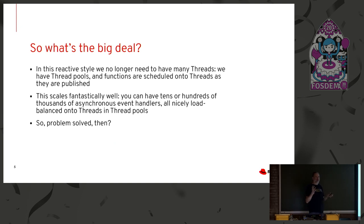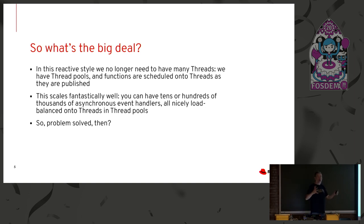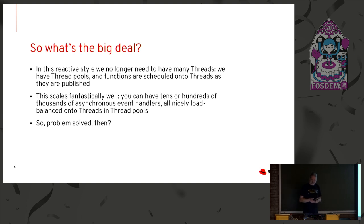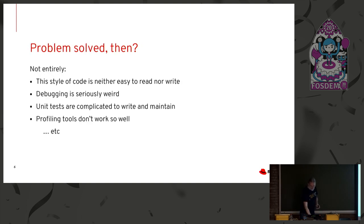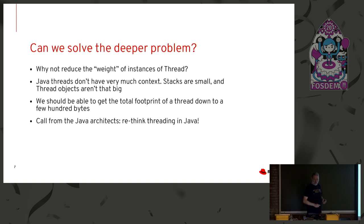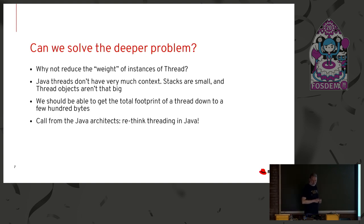We don't need to have so many threads. We just schedule everything onto thread pools. If your thread pool is the same size as the number of actual cores you have in your physical machine, that works beautifully because the operating system never needs to preempt any threads. So why not reduce the weight of instances of Thread? Java threads don't need very much context — certainly an awful lot less than kernel threads do.